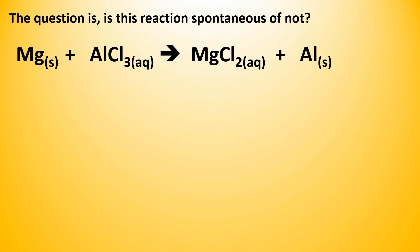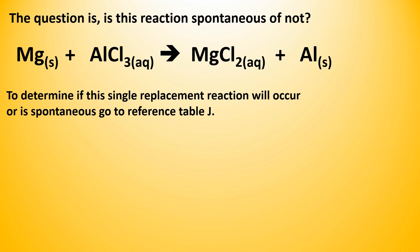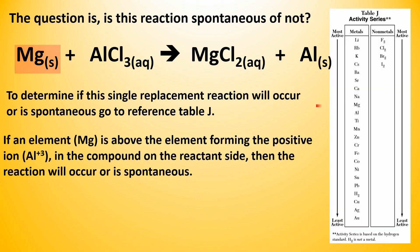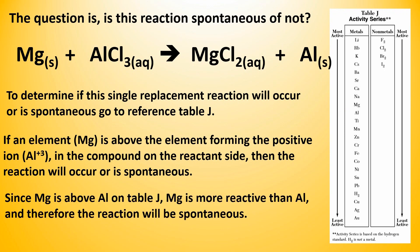The question is: is this reaction spontaneous or not? To determine if a single replacement reaction will occur or is spontaneous, go to reference table J. If an element — in this case Mg — is above the element forming the positive ion, or aluminum plus 3 ion in the compound on the reactant side, then the reaction will occur or is spontaneous. Since magnesium is above aluminum on reference table J, magnesium is more reactive than aluminum and therefore the reaction will be spontaneous.